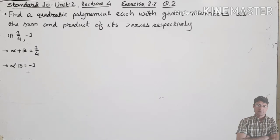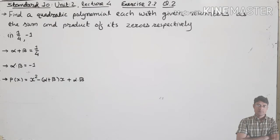How do we find the quadratic polynomial? The polynomial having zeros alpha and beta — the formula is x squared minus (alpha plus beta)x plus alpha into beta. This is the polynomial formula for zeros alpha and beta: x squared minus (alpha plus beta)x plus alpha into beta.